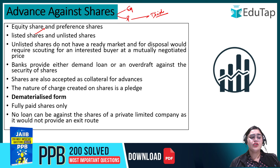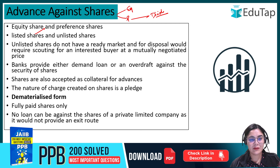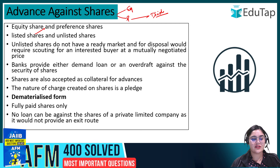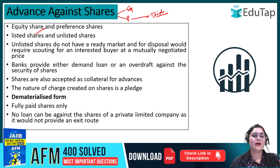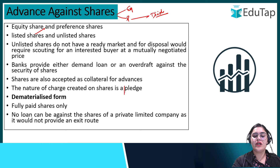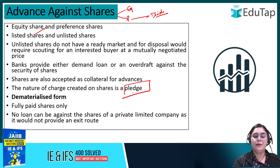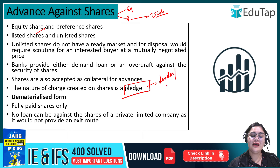Banks can give a demand loan or an overdraft facility against shares. The shares can be accepted as collateral for the advance. The nature of the charge created is a pledge, which means the lender — the bank — has possession of the shares.